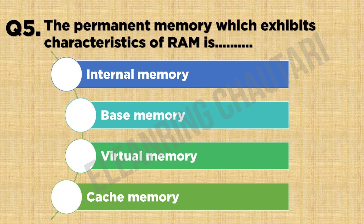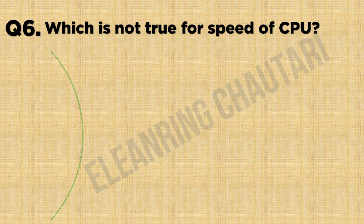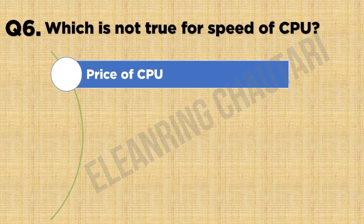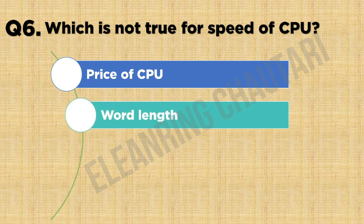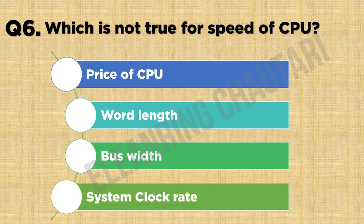Question number 6: Which is not true for speed of CPU? Option A: Price of CPU. Option B: Wordplay. Option C: Bus speed. Option D: System profit. The answer is Option A: Price of CPU.